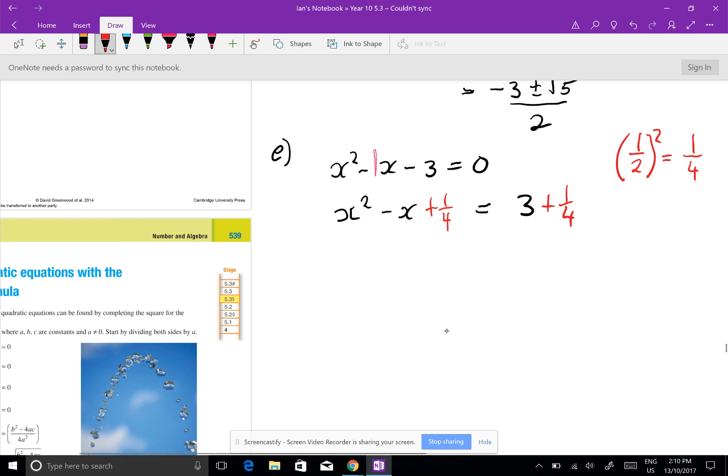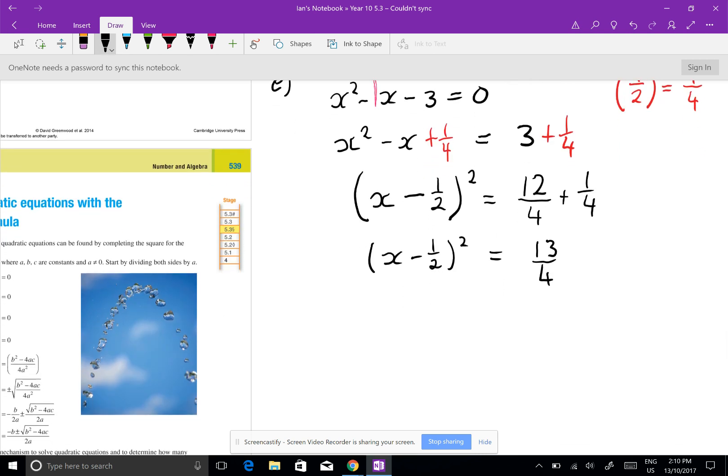This now becomes x minus a half all squared. Now 3 plus a quarter is the same as 12 on 4 plus 1 on 4. Now you can use your calculator to do that. x minus a half squared will equal 13 on 4. So you can do that a little bit with the calculator but you should be good at that.